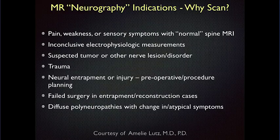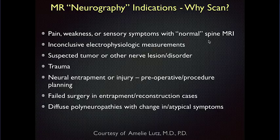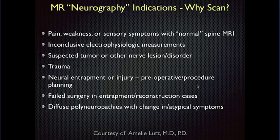So why would we want to scan anyway? My colleague Amelie Lutz put together a good summary of the different possible indications. Typically, many patients have had the spine worked up and it's normal, or the findings don't explain the peripheral nerve symptoms. There may be electrophysiologic measurements pointing to a nerve disorder, possibly suspecting a tumor or trauma, nerve entrapment syndromes where they're looking for preoperative planning, or postoperative cases. Patients with peripheral polyneuropathies managed by neurologists may get imaging if there's a change or atypical symptoms.